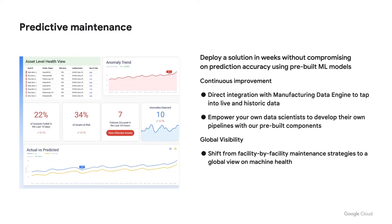Another important area in manufacturing is predicting when to perform maintenance — when to take a machine down, when parts are going to wear out. This affects quality and uptime. With predictive maintenance, we have a solution deployable out of the box using pre-built machine learning models that directly integrate with our manufacturing data engine. Your data scientists or ours can build pipelines and models to give you greater visibility into your operation — predicting machine downtimes, building maintenance schedules — all visible on Looker dashboards.